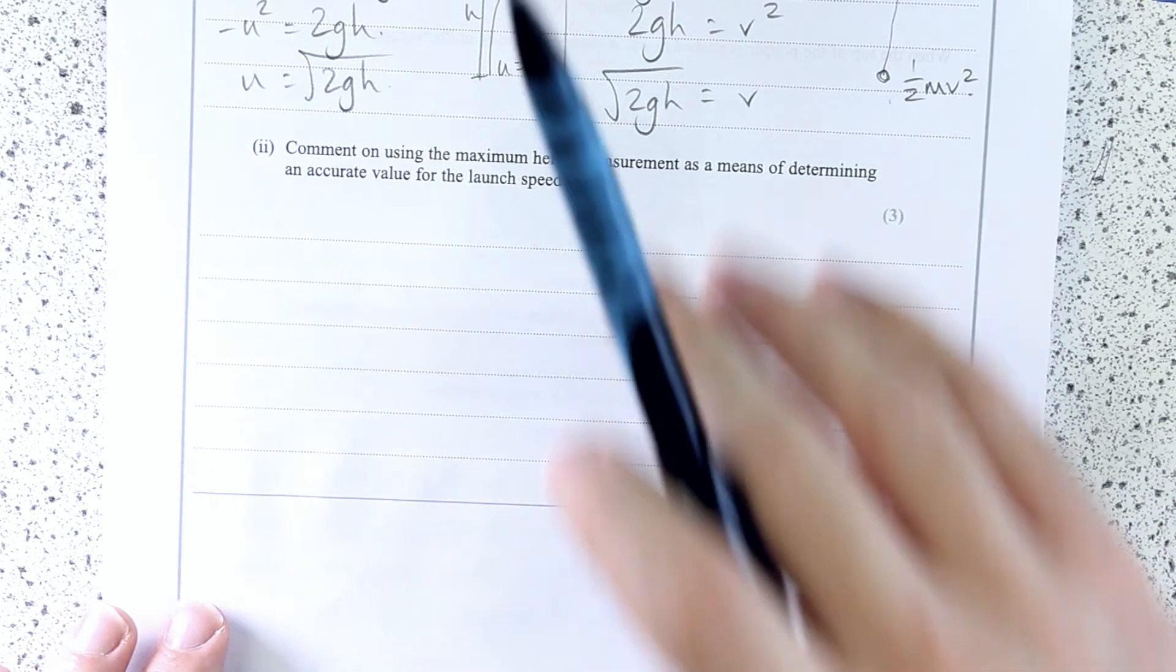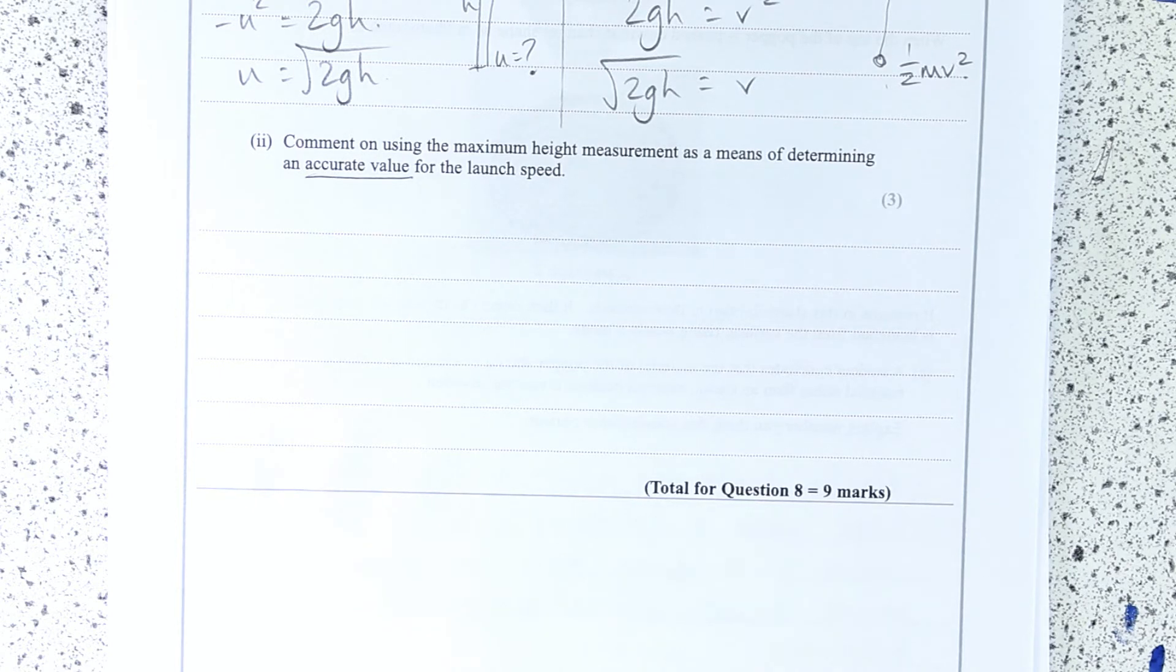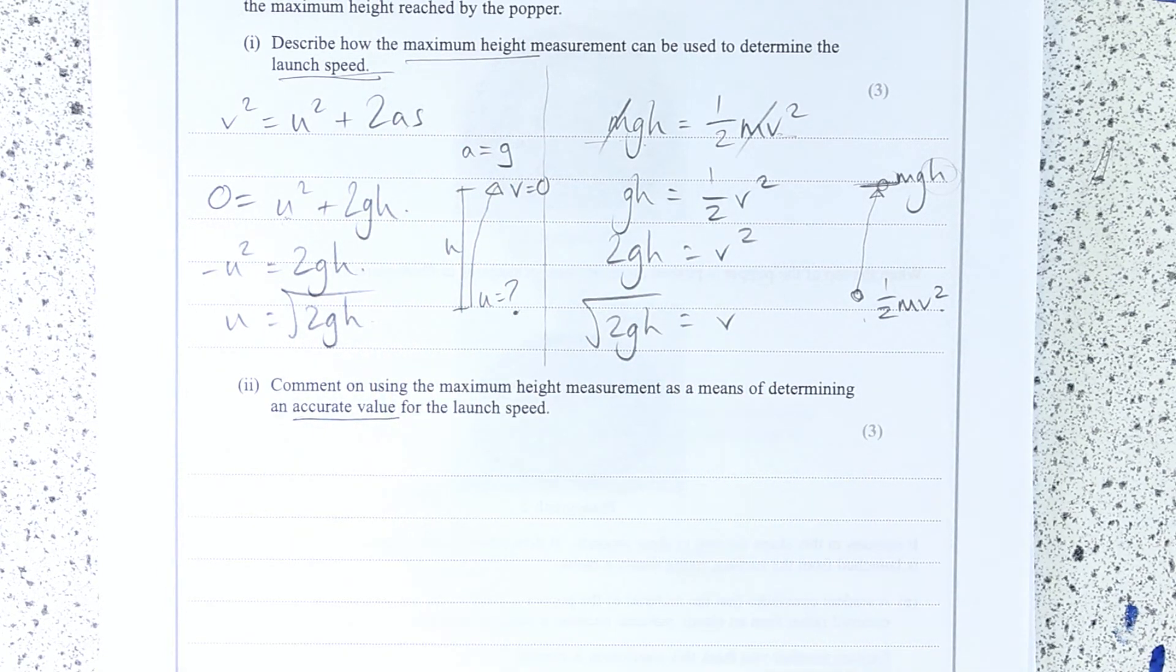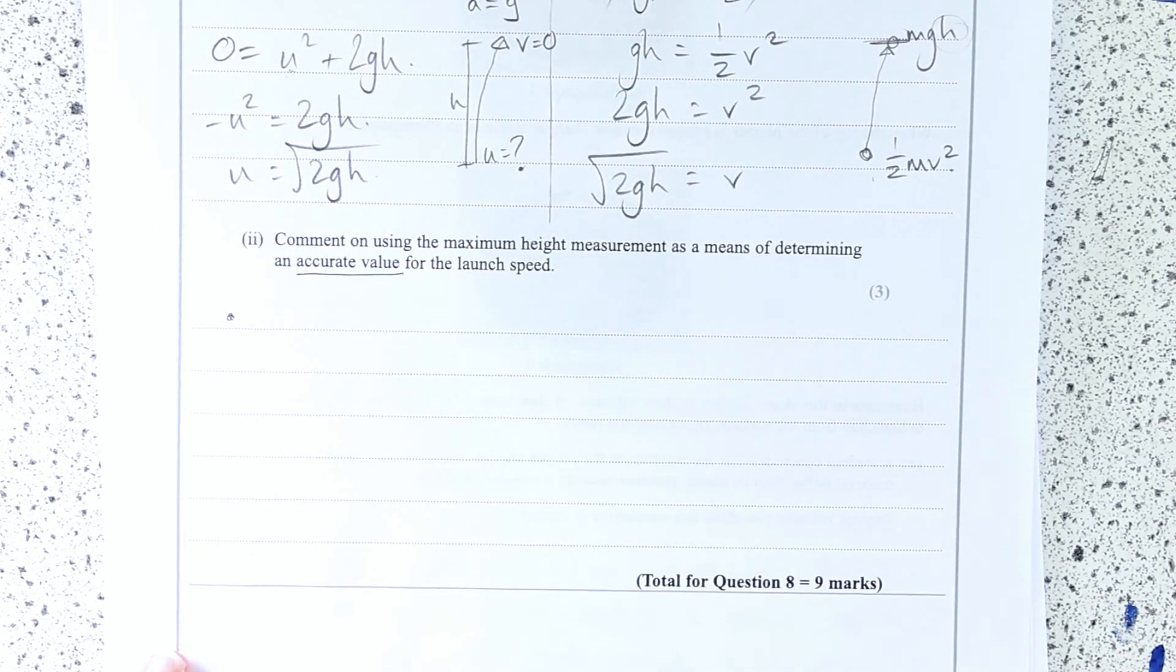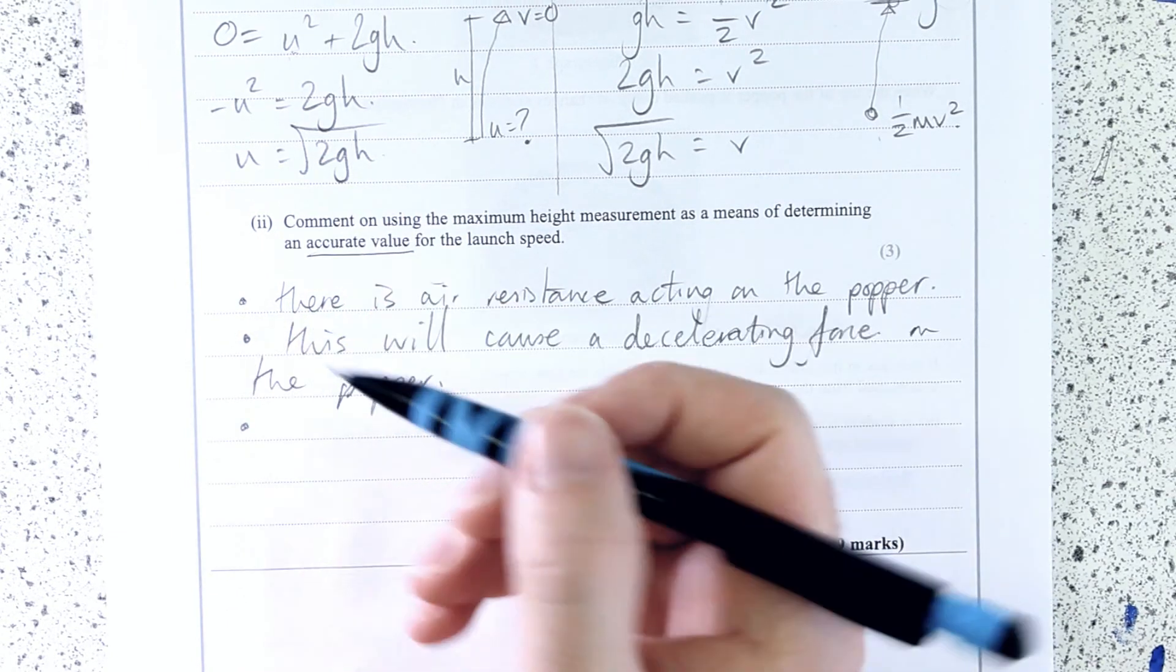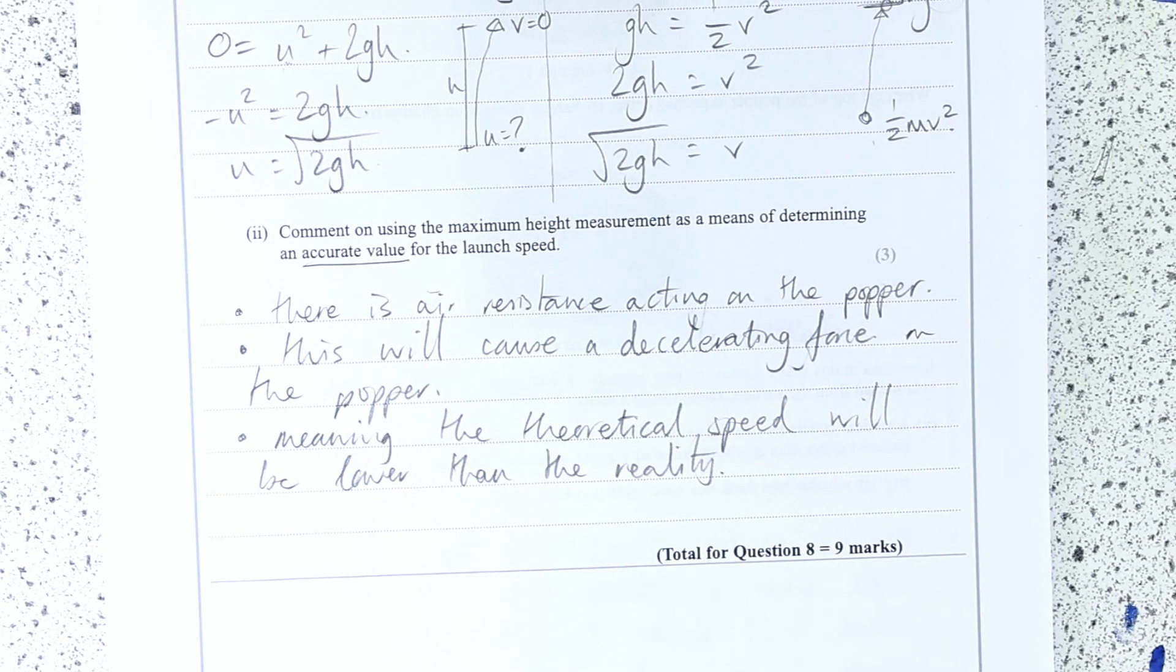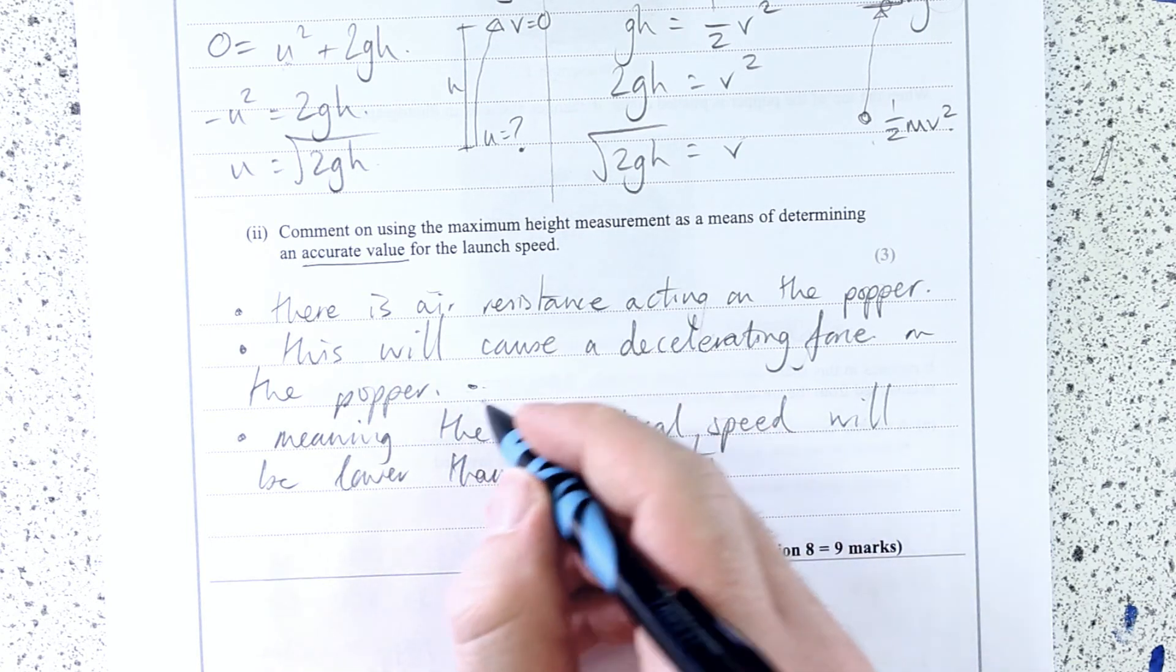Comment on using the maximum height measurement as a means for determining an accurate value for the launch speed. Well, accurate means close to the true value. It's not going to be quite at the true value because both of these equations are constant acceleration or ignoring air resistance. So that's the issue really. There is air resistance, or the theoretical method ignores air resistance. Well, what will this do? This will decelerate the popper, meaning that the theoretical speed will be lower than the actual speed. You could also, because we've gone through the conservation of energy, you could say energy dissipated because of air resistance.